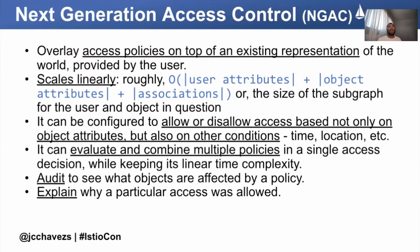Auditability is also possible by traversing the graph — whenever you put a policy in place you can see beforehand what objects are affected by it. And you can explain why a particular access was allowed or denied, which is a key point. In other access control models it's really hard to explain why a particular access was allowed, because you have to resolve all the conditions at that time and then reconcile them.